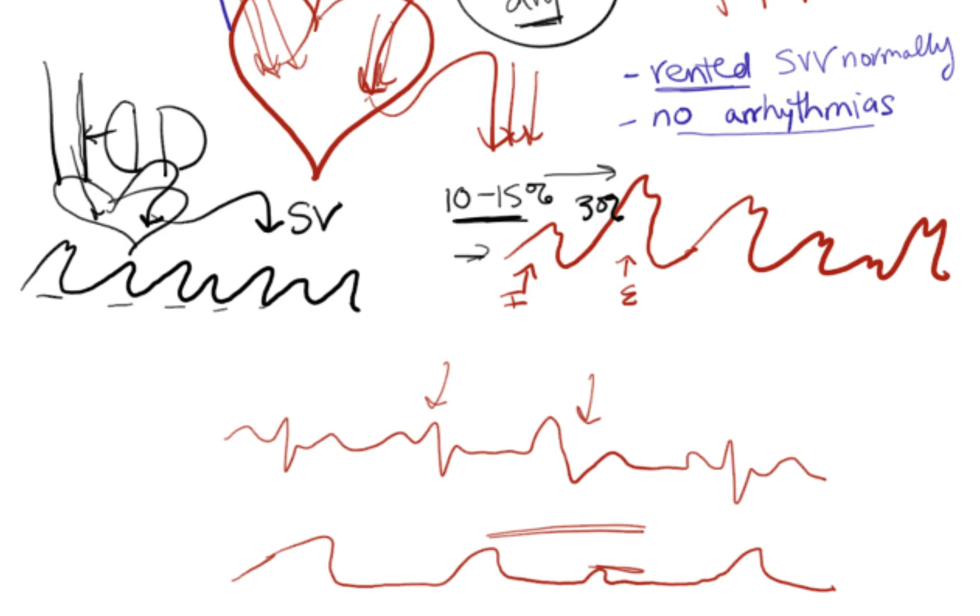And so high stroke volume variation can't tell you anything about your volume status. We see the same thing with atrial fibrillation. They have inconsistencies in their rate, and so each beat might have a different filling time and filling pressure, which will place it at a different place on the Frank-Starling curve, and so they'll have different contractility and cardiac output with each beat because of the arrhythmia.